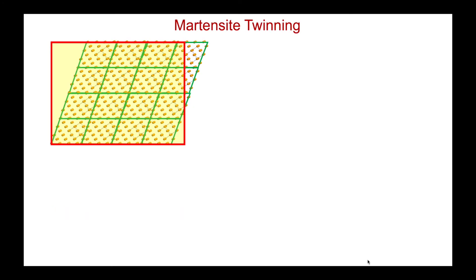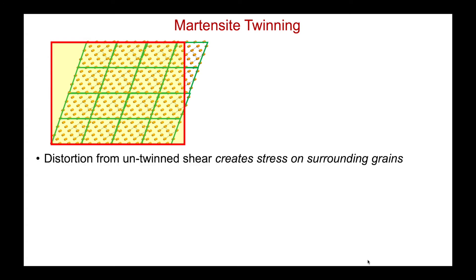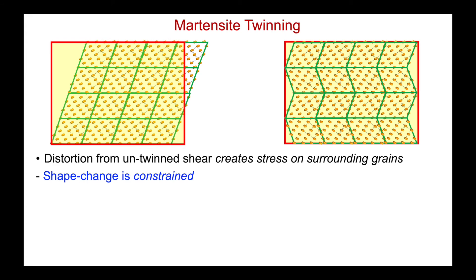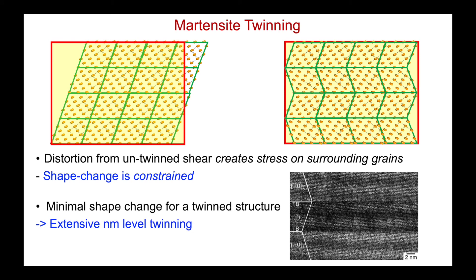The twinning in martensite is not just associated with the equal chances of shearing to the left or to the right. It is critical in alleviating stresses and strains that would otherwise be present in an untwinned microstructure. A shear in just one direction would cause a large change in the shape of the grain, inducing large and unfavorable stresses on surrounding grains with different orientations. The surrounding grains constrain this change in shape. It is this constraint effect that induces the extensive twinning, allowing the transition to proceed without any significant change in grain shape. This extensive twinning alleviates stress and allows the transition to proceed with extreme rapidity, and the twinning is at the angstrom level.